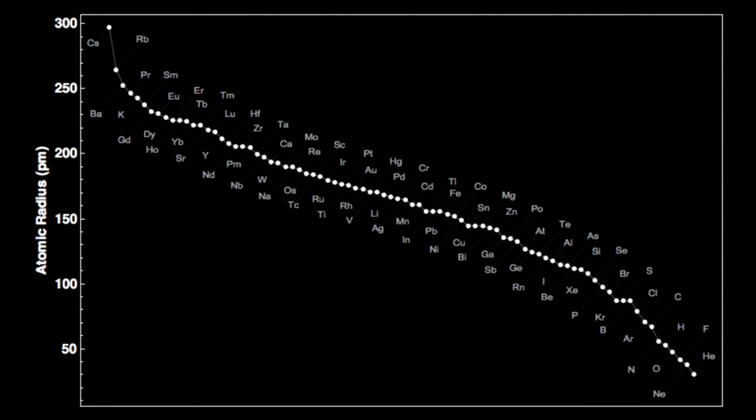Here, our atom size is sorted from largest, cesium on the left, to smallest, helium on the right. Xenon is a smallish atom compared to the rest of the elements.